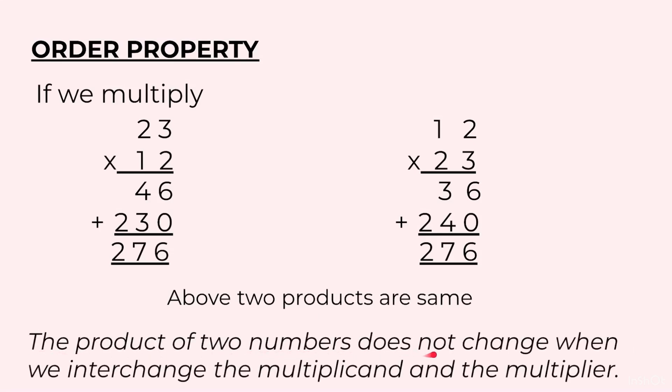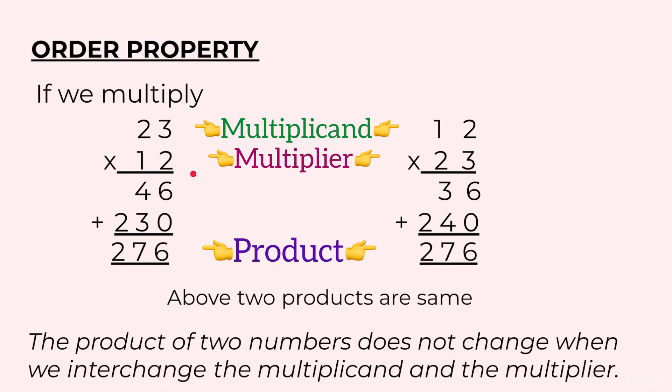The product of two numbers does not change when we interchange the multiplicand and the multiplier. The first number is called the multiplicand, the number by which it is multiplied is called the multiplier, and the answer to this multiplication is called product.